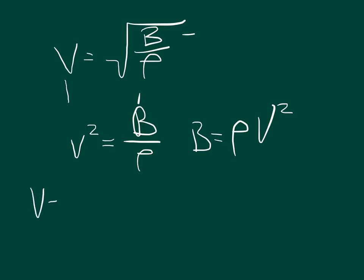The problem gives us the velocity is 5 kilometers per second. We've got to put that into meters per second, so that's 5,000 meters per second. And it gives us the density is 2,700 kilograms per cubic meter.